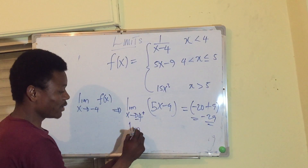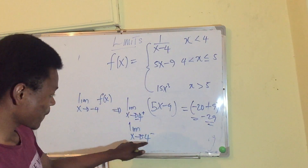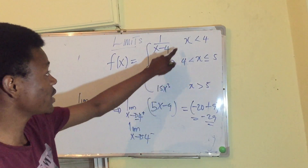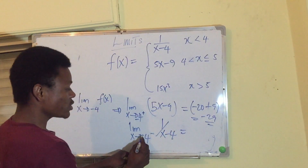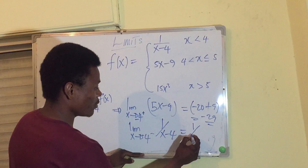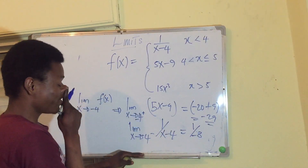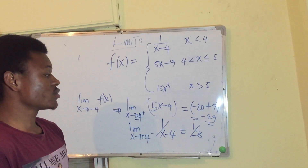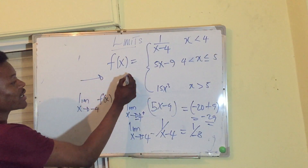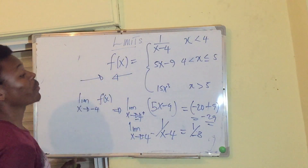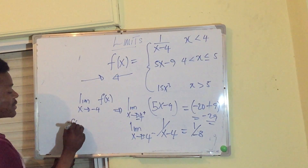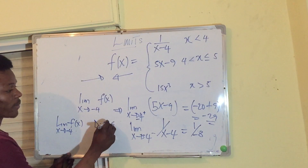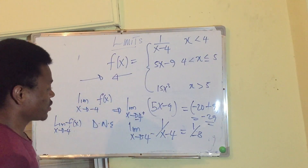From the negative direction, x < −4 means we use 1/(x−4): substituting −4 gives 1/(−4−4) = 1/(−8). Since the limit from the positive direction is −29 and from the negative direction is −1/8, they are not equal, so the limit as x approaches −4 does not exist.